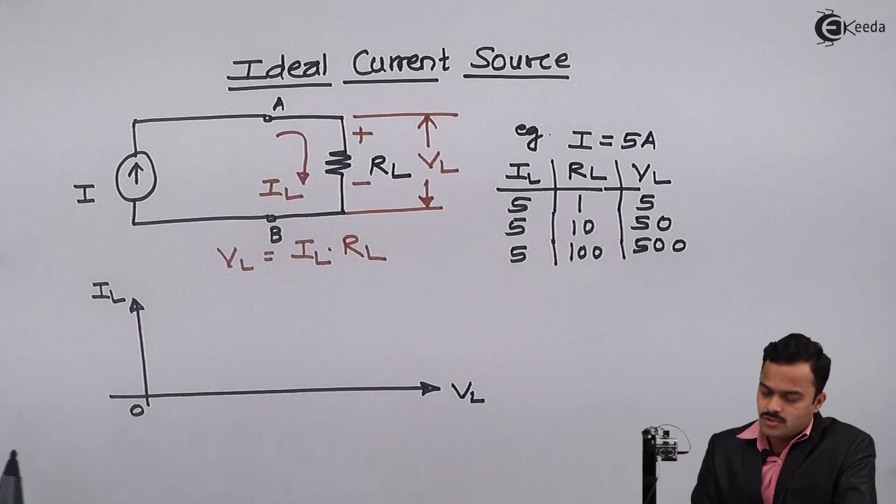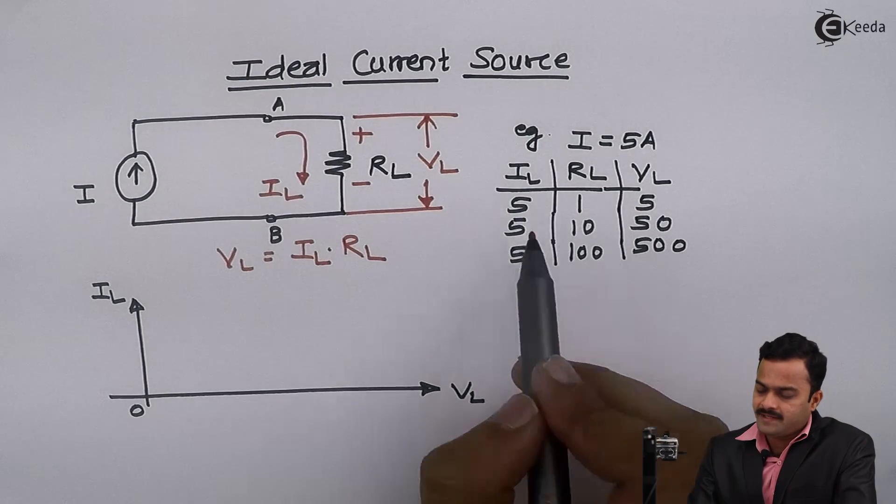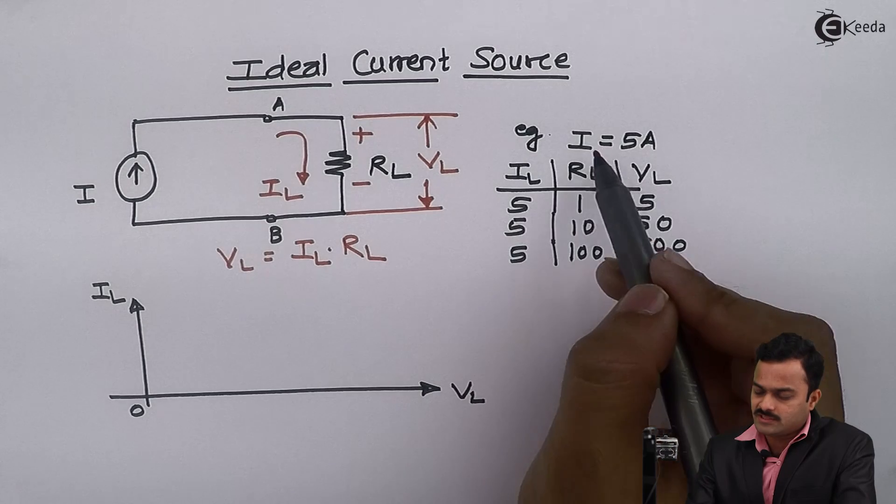So no matter what are the values of VL, I will get IL same which is nothing but I value is 5 ampere.